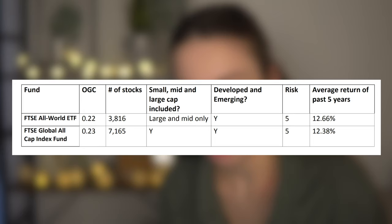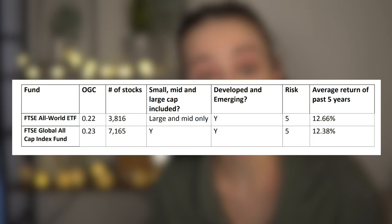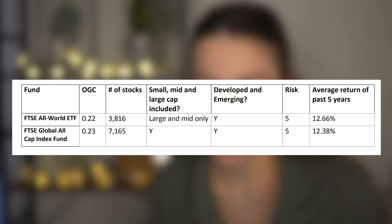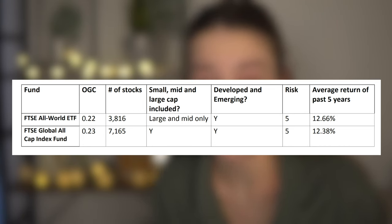The number of stocks is another area where these two funds differ quite a lot. With the All World you are getting 3,816 stocks, whereas with the Global All Cap you are getting roughly double that at 7,165 stocks — so you're getting exposure to way more stocks with the Global All Cap. This comes back to the small cap exposure: do you see the benefit of investing in those small cap companies? They offer potential higher returns but carry a little more risk.